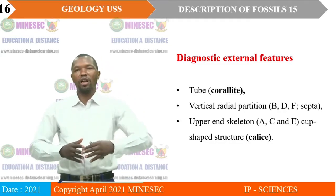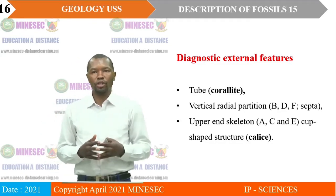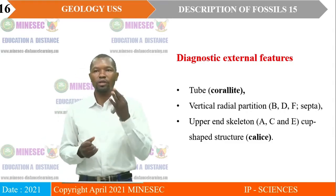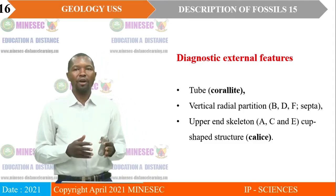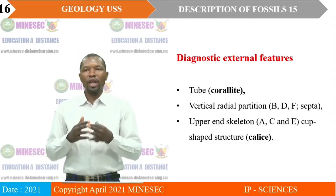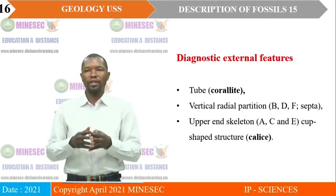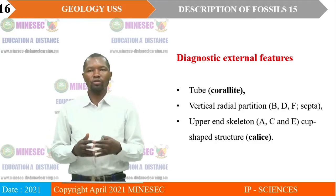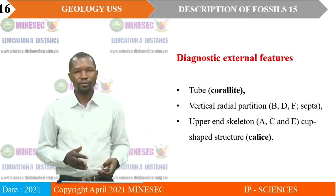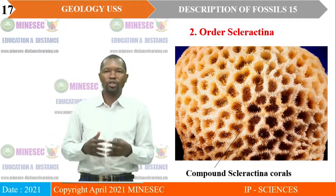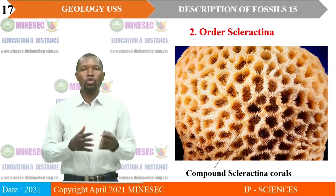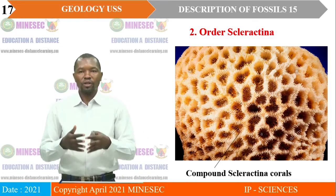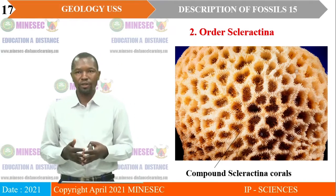Then we have a vertical radial partition — that is the common feature of fossil D and F — called the septa. Then we have the upper end skeleton, which is common with fossil A, C, and D — a cup-shaped structure called the chalice. This guides us to continue with the two orders under the class Anthozoa, commonly referred to as coral. So, we are in the second order: Scleractina.